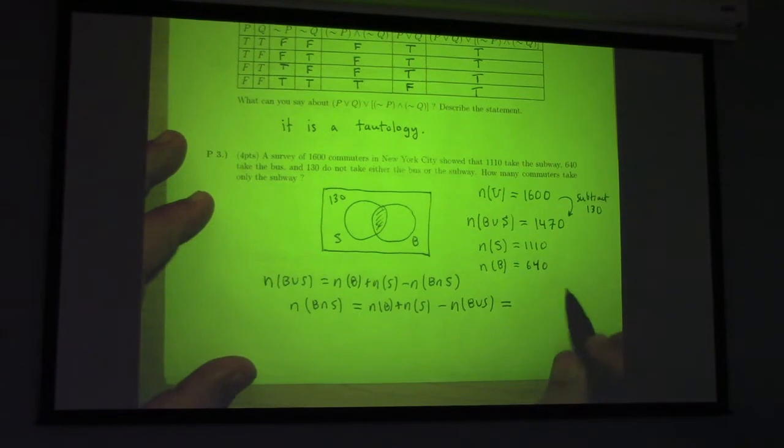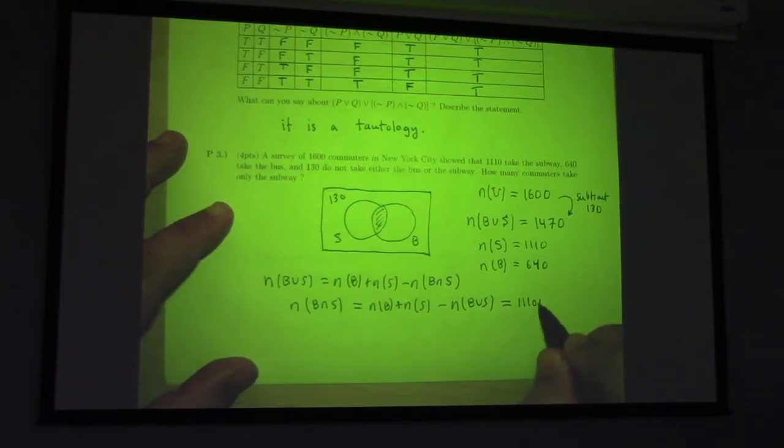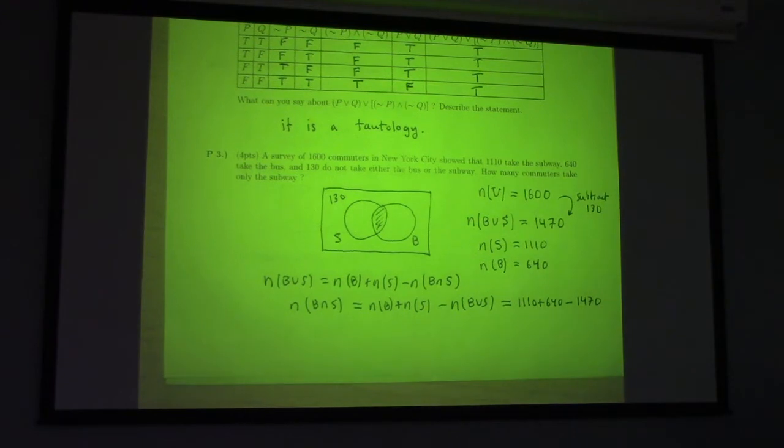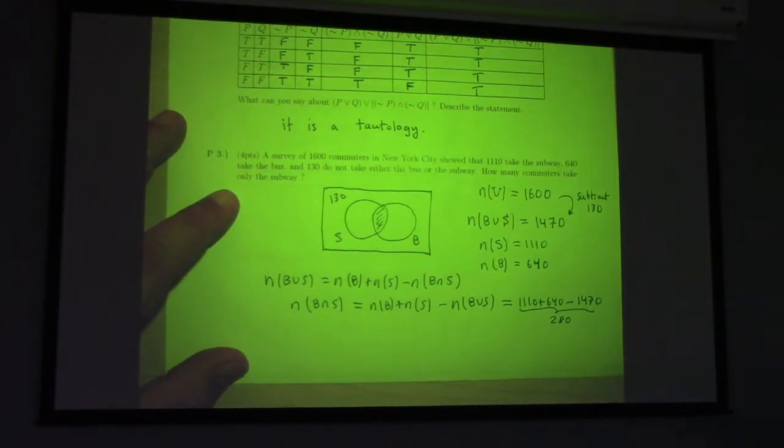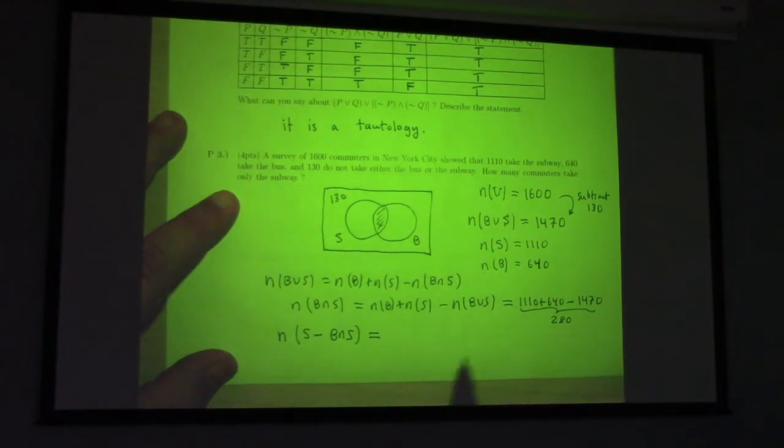We know that the number in the bus union the subway is equal to the number in the bus plus the number in the subway minus the number in the intersection. This is the inclusion-exclusion principle. So, this tells us that the number in the intersection is the number in the bus plus the number in the subway minus the number in the union of the bus and the subway. Which is equal to 1,110 plus 640 minus 1470, which is 280. So if there's 280 in the green-shaded region, the number in the subway, the intersection of B and S is 1,110 minus the 280 which would be 830. Yeah!